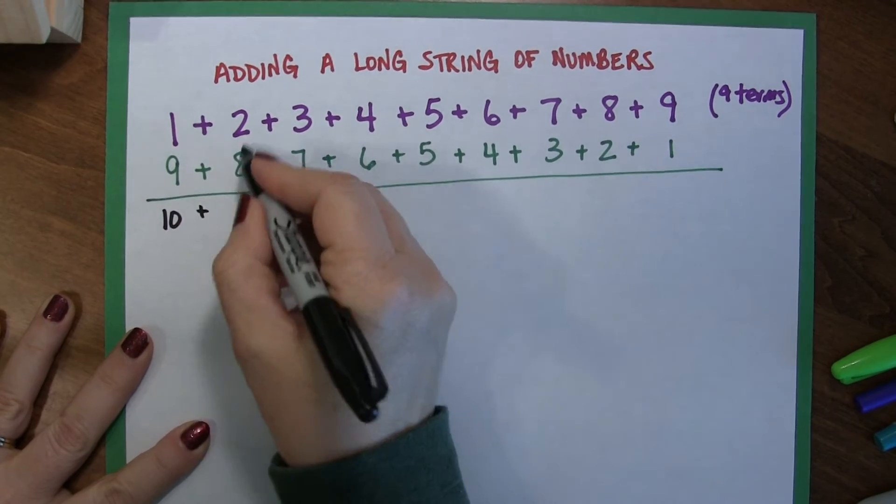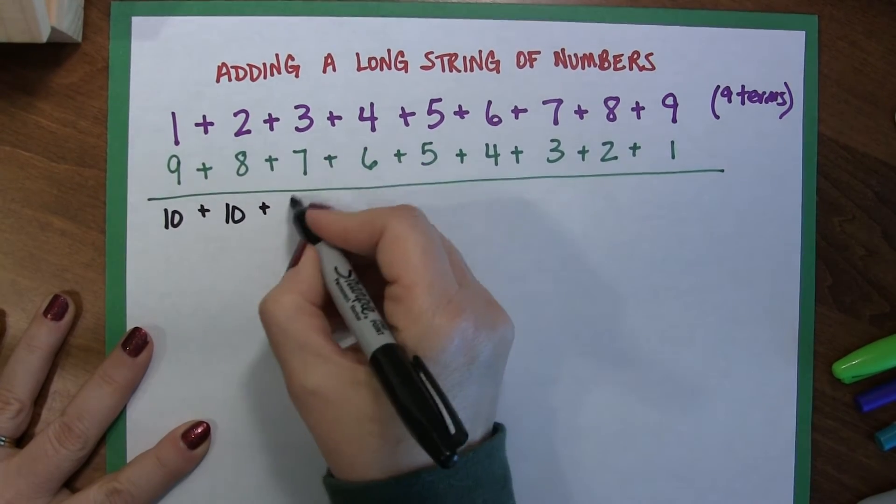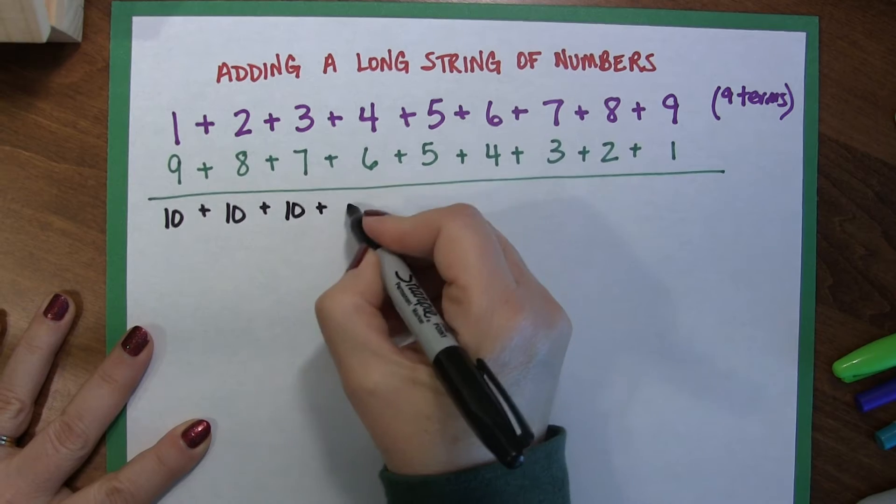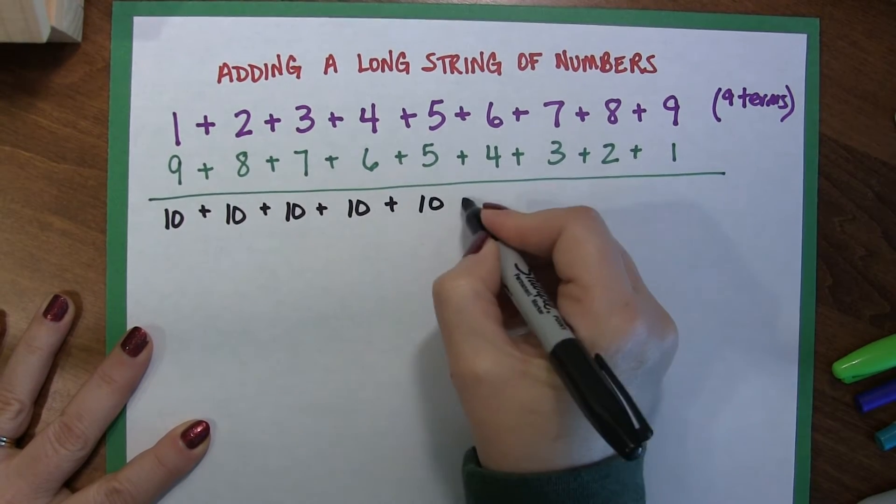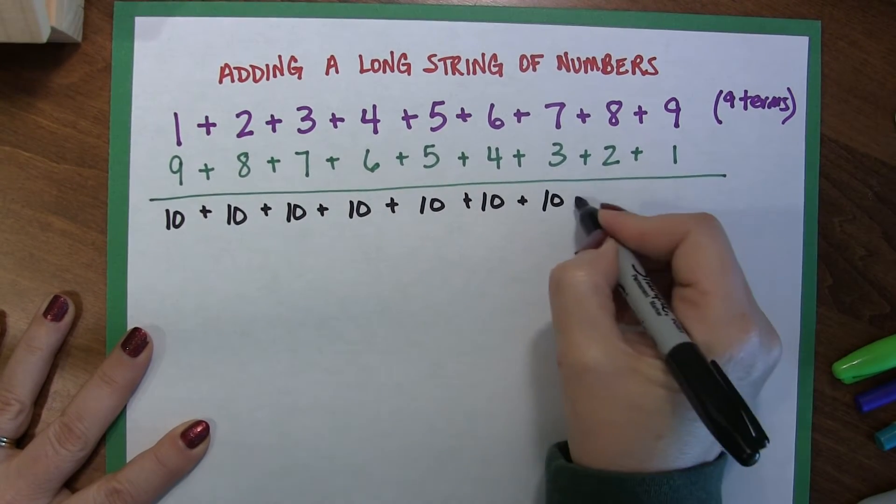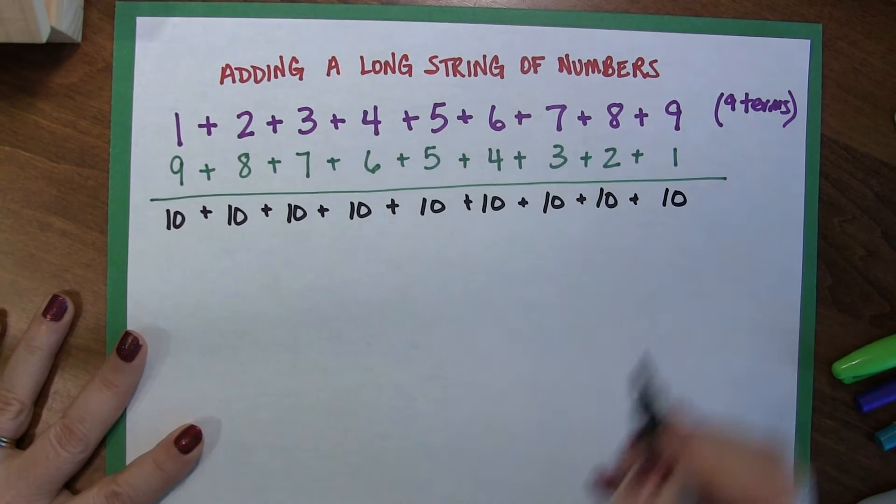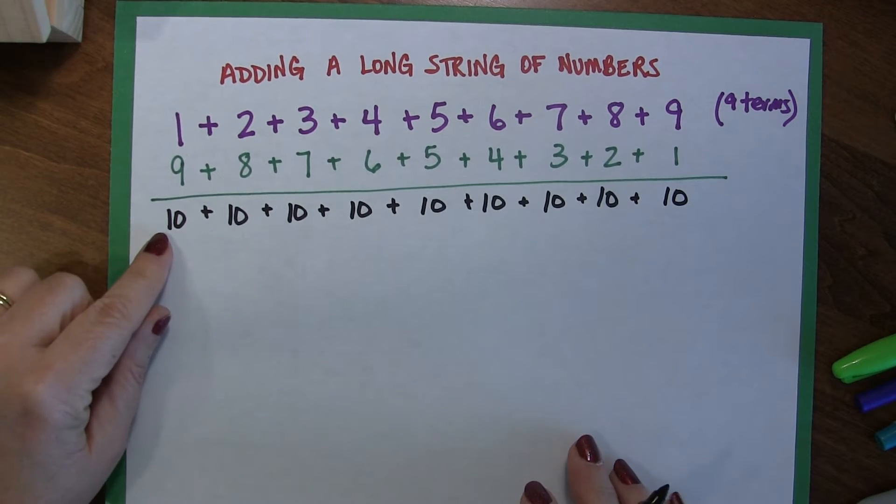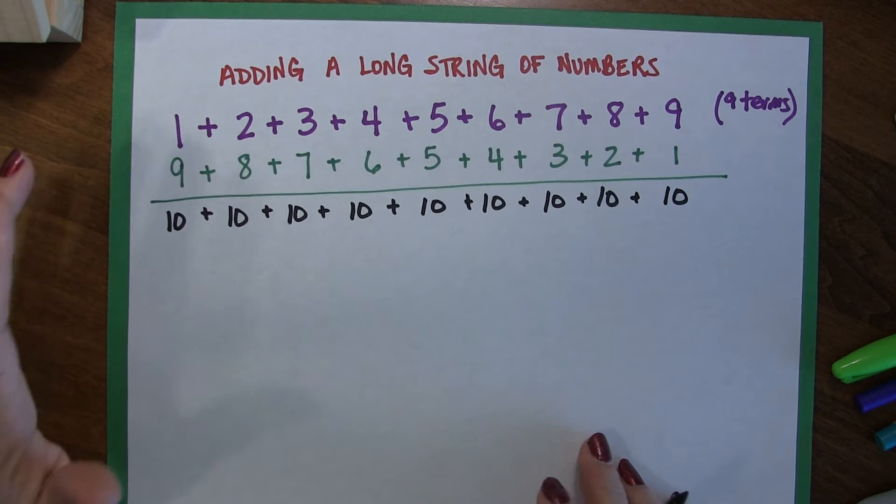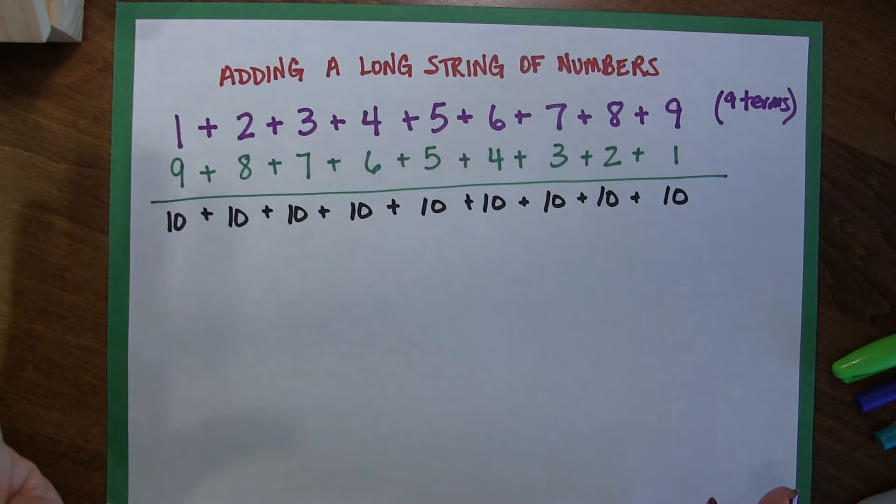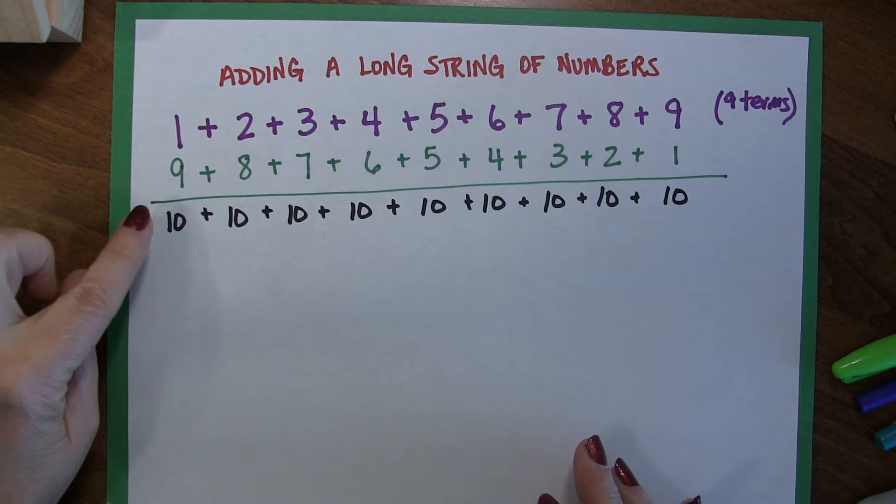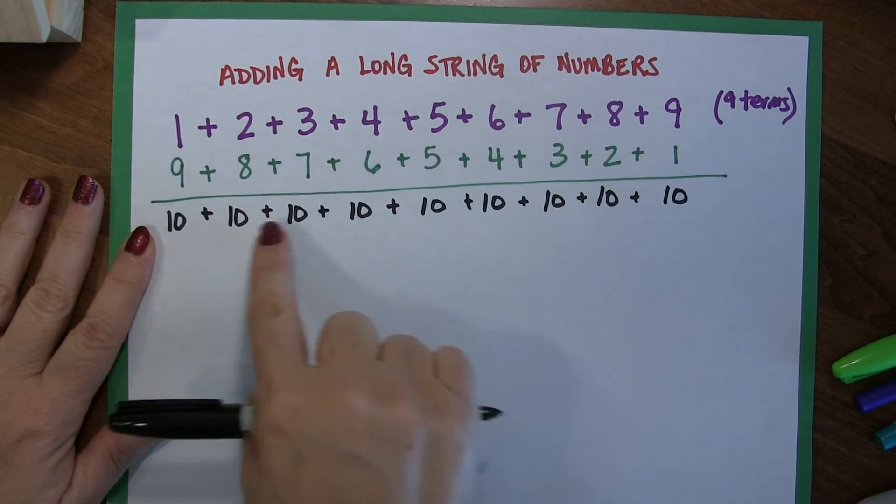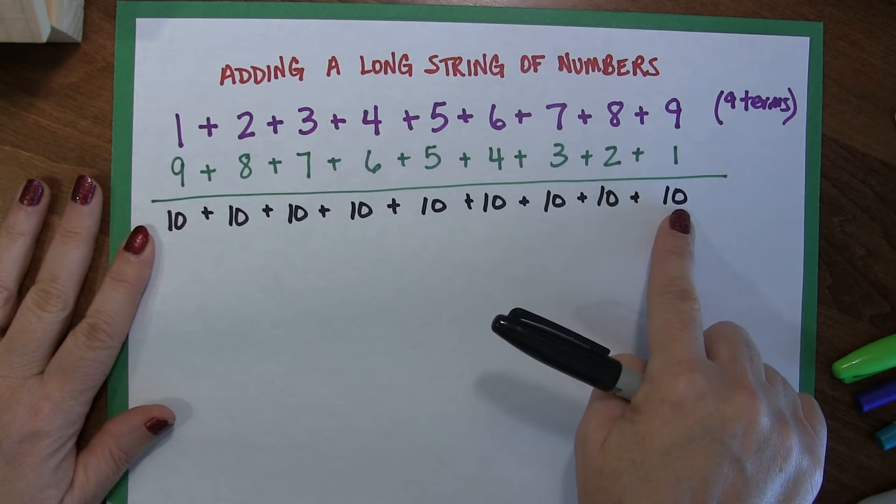1 plus 9 is 10, 2 plus 8 is 10, 3 plus 7 is 10, 4 plus 6 is 10, 10, 10, 10, 10, 10, 10. Whew! Now, what's amazing about this is not so much that you get the number 10, which just coincidentally happens to be a pretty cool number, but what's interesting is that all of your terms now become 10.